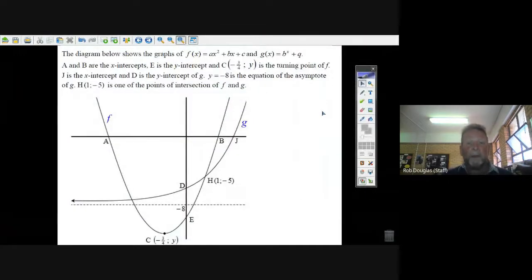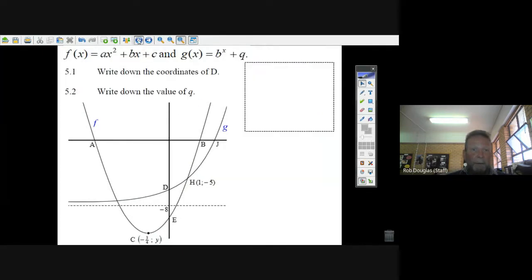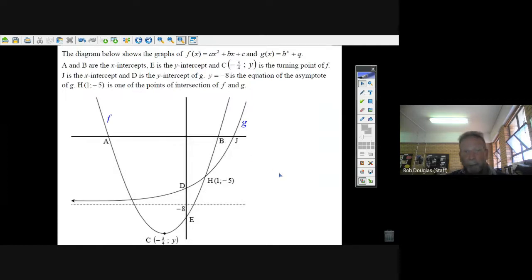Okay, this is the Eastern Cape exam. I think it's question number 5, just question 5. It's a big parabola question. It's got a lot of parts to it, so let's get started.